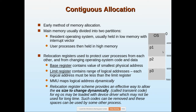Each memory address generated by process P1 is checked against the base register and the limit register. If the address is below the base register, it raises an error. If the address is above the sum of base plus limit, it also generates an error. By doing this checking, the OS protects one user from wrongly modifying the code or data of another user.